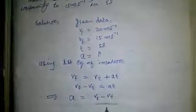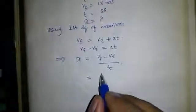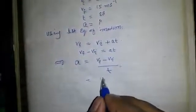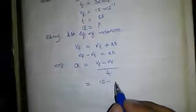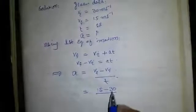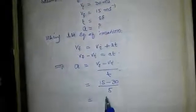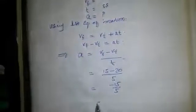Now putting the values: vf is 15, vi is 30, over 5. That's 15 minus 30 over 5, which equals minus 15 over 5, which is equal to minus 3 meters per second per second.